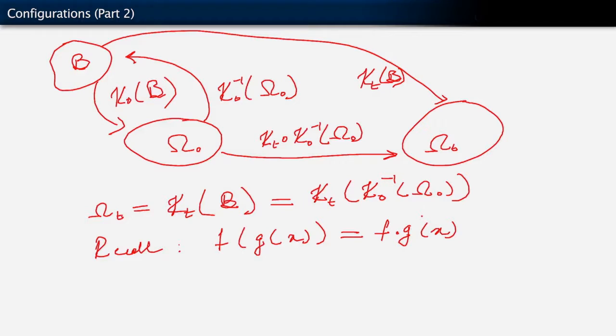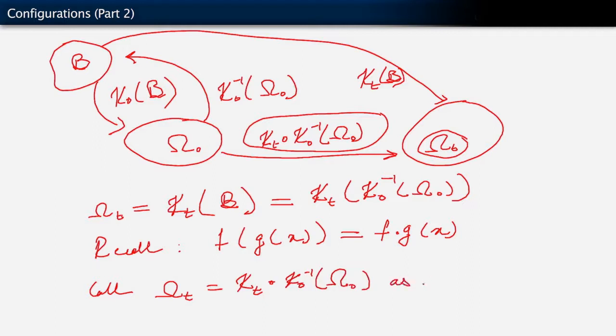But now you observe what we've done. We've constructed a map that takes us from our reference configuration omega nought to what we will now call our current configuration omega sub t. We will now call omega sub t which is kappa t of kappa nought inverse of omega nought as the current or spatial configuration at time t.